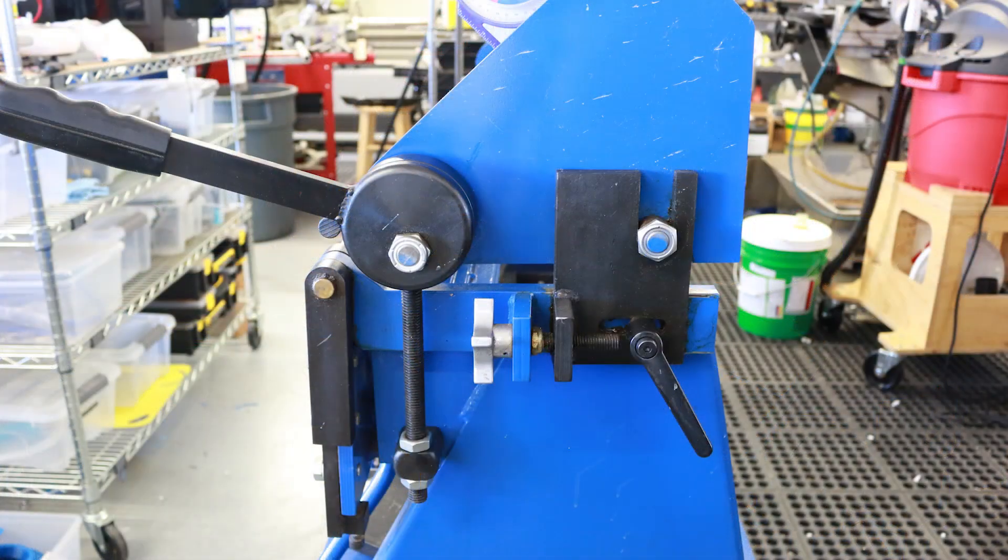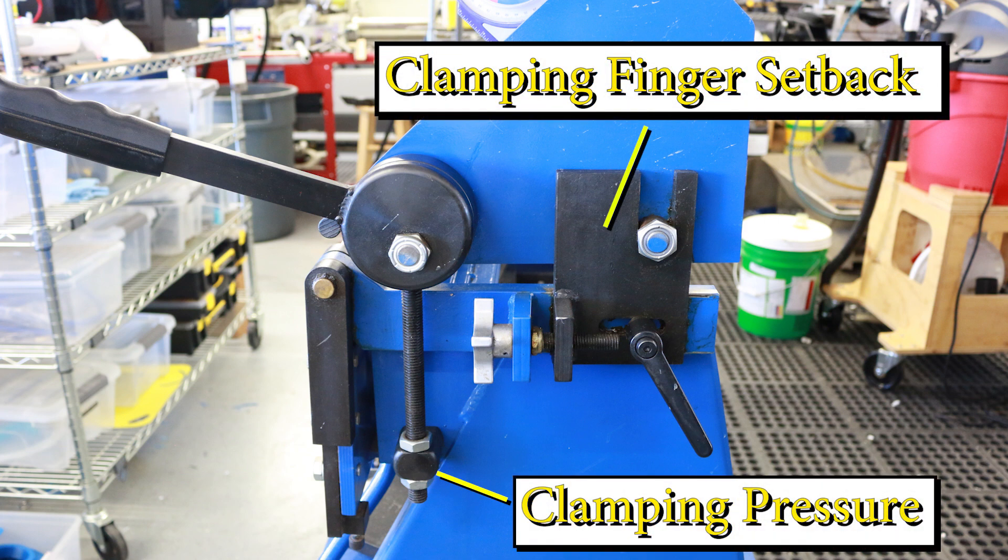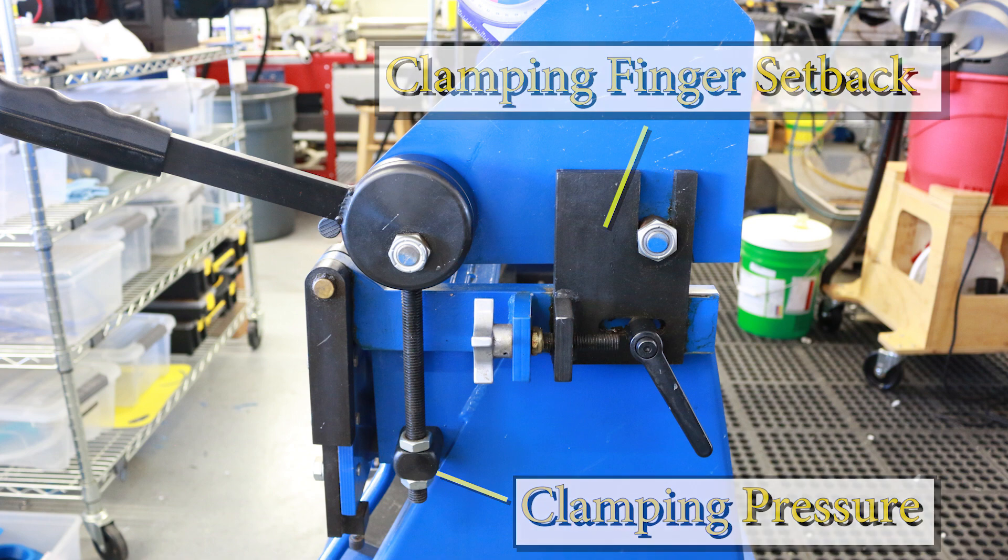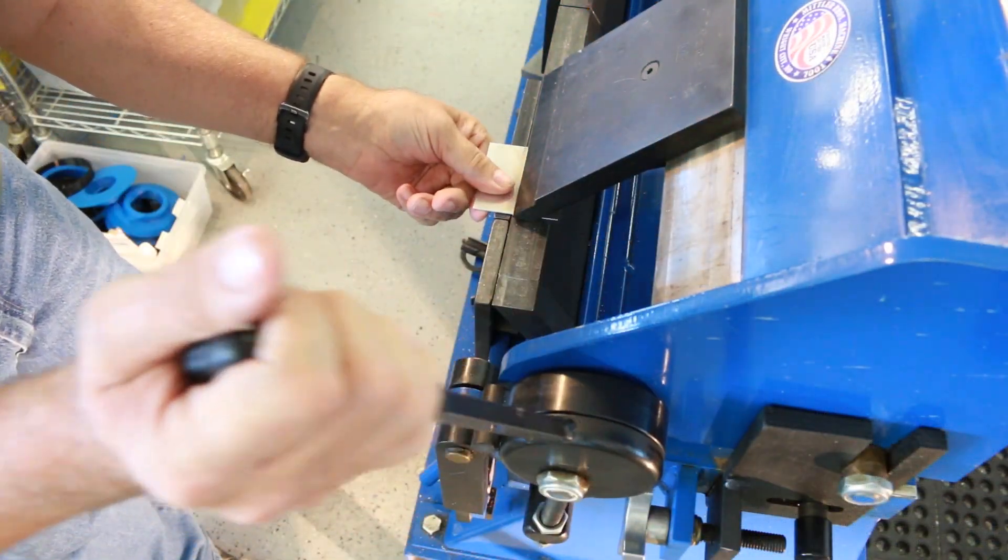Remember, it's a precision tool. The adjustment mechanisms are located on each end of the brake. There are two adjustments that will be necessary anytime that you change material thickness: clamping pressure and clamping finger setback. At first glance, you might think this seems a bit cumbersome just to bend a piece of sheet metal, but I assure you once you've done it a few times it's really quite simple.